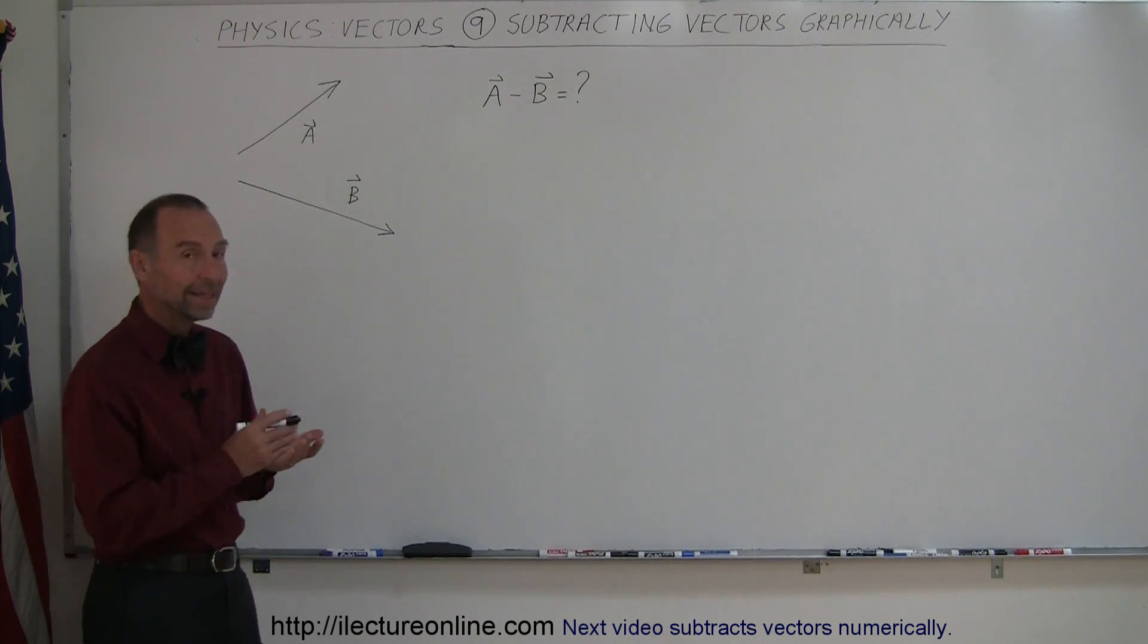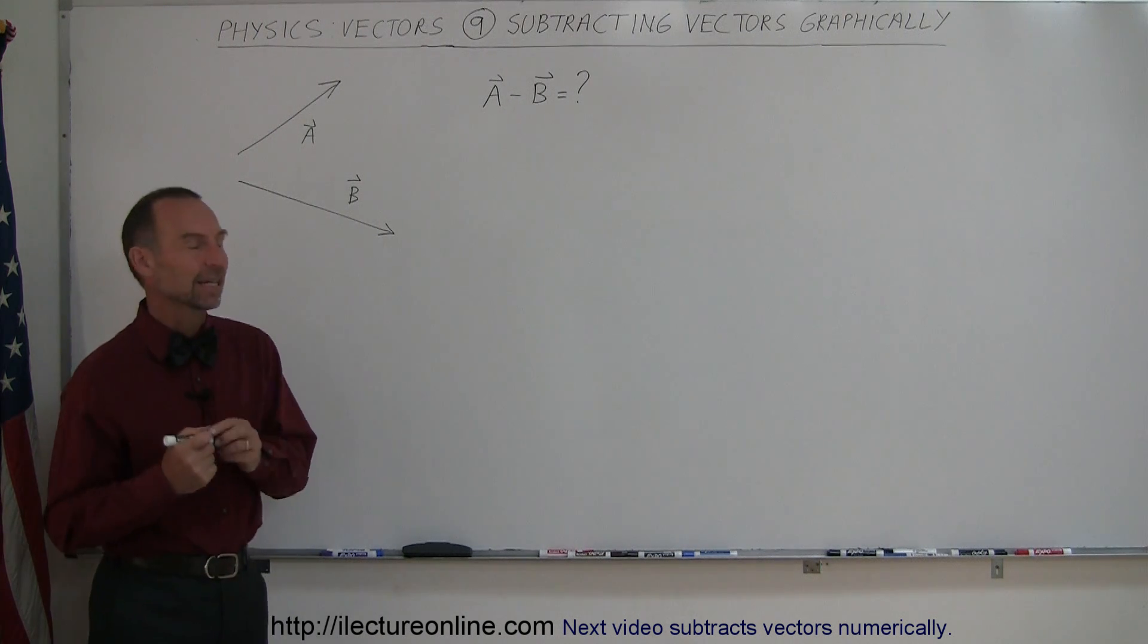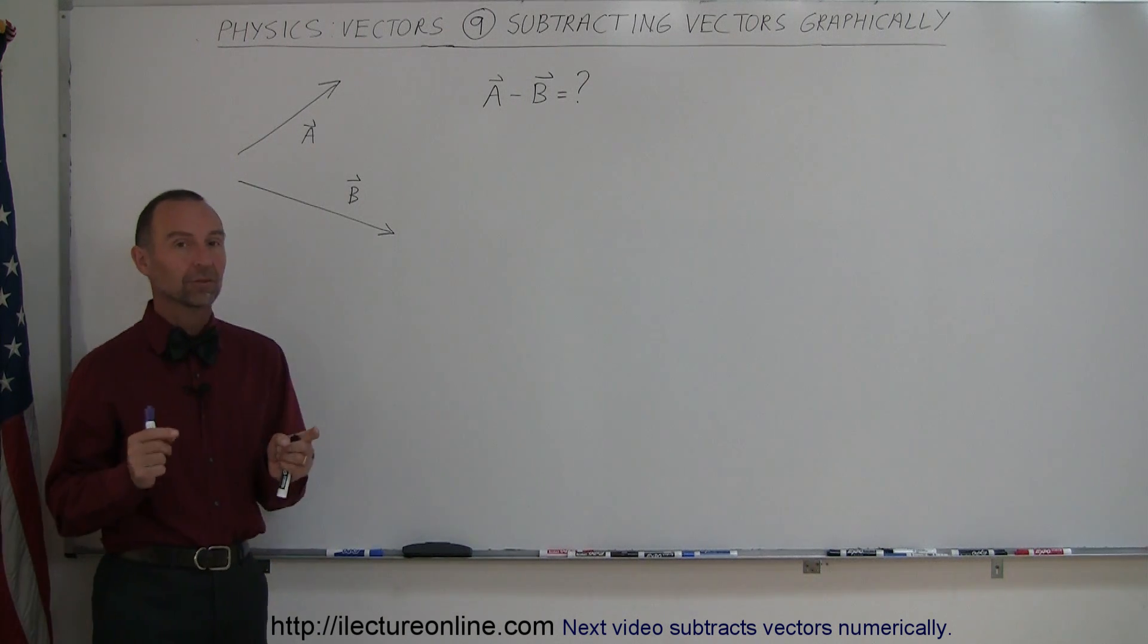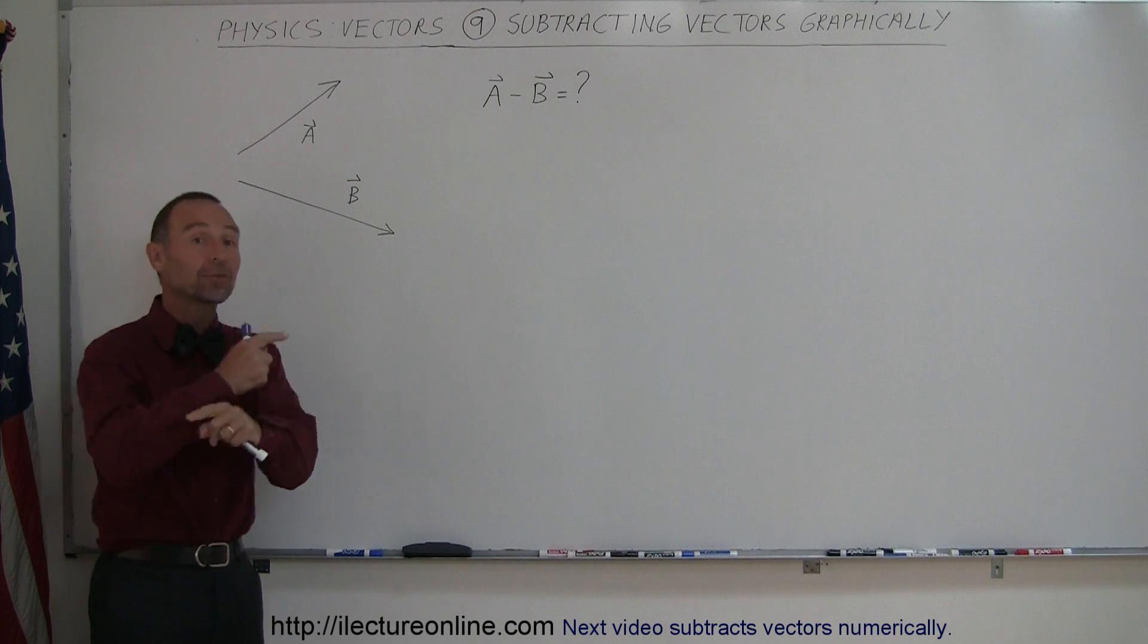Well, it turns out that subtracting a vector is the same as adding its negative. So what is the negative of a vector? The negative of a vector is the same vector with the same length, but pointing in the opposite direction.